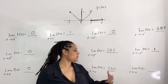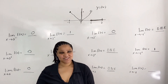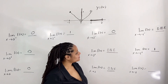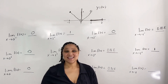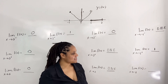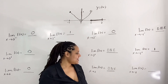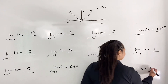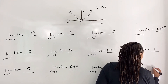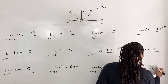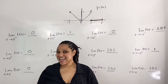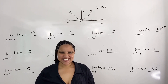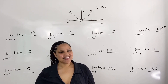And last, we want to evaluate the limit as x approaches negative 1. We see that the limit as x approaches negative 1 from the left does not equal the limit as x approaches negative 1 from the right, so the limit as x approaches negative 1 does not exist. And that is how you evaluate limits from a graph. Thank you for watching and I will see you in the next video.